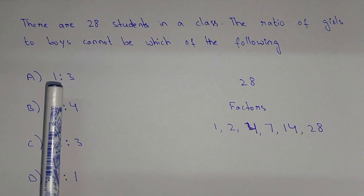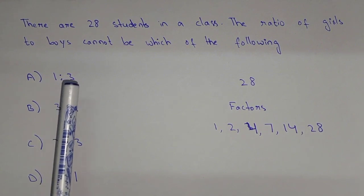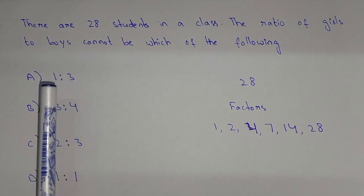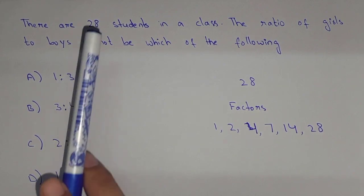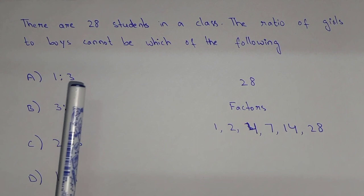And even if you see that 1 is to 3, it means 7 girls and 21 boys. So 7 plus 21, that is 28. So that is the 1 is to 3 ratio.